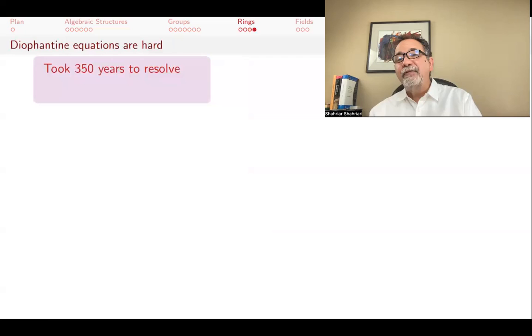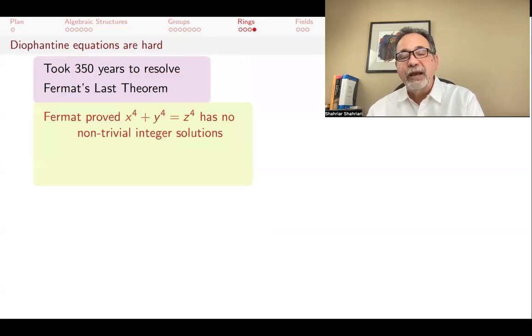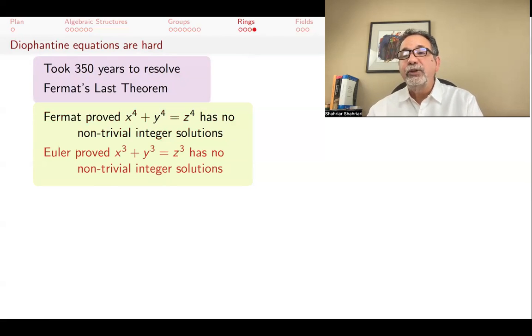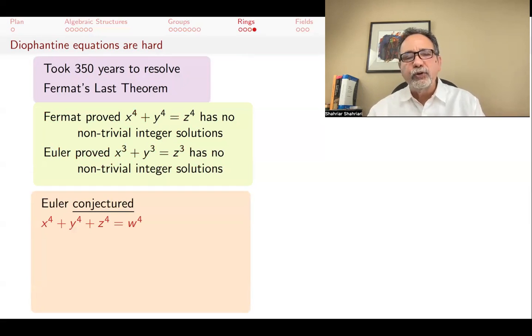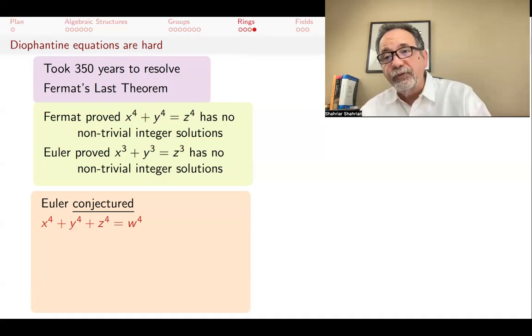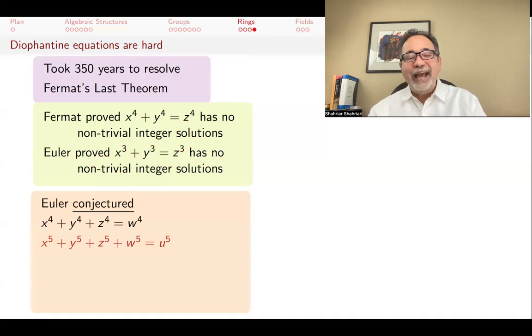I do want to emphasize that Diophantine equations can be very difficult. It took 350 years to resolve Fermat's last theorem, but why? Why is that so hard? Here's an interesting example. Fermat himself proved the case n equals four, that x to the fourth plus y to the fourth equals z to the fourth has no non-trivial integer solutions. Euler later proved a harder case when n equals three, that x cubed plus y cubed equals z cubed has no non-trivial integer solutions. Euler then went on to conjecture that x to the fourth plus y to the fourth plus z to the fourth equals w to the fourth should also not have any non-trivial solution. And x to the fifth plus y to the fifth plus z to the fifth plus w to the fifth equals u to the fifth, and so on. All of them should have no non-trivial integer solutions.